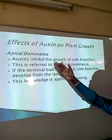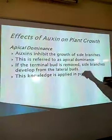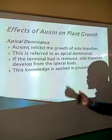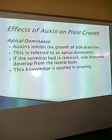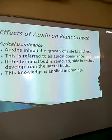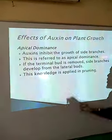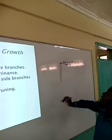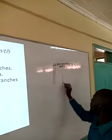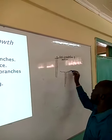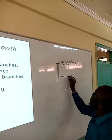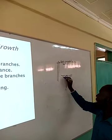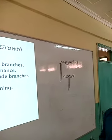Apical dominance is where the auxins inhibit the growth of the side branches — the inhibition of the side branches at the expense of the apical stem. If the terminal bud is removed, the lateral side branches develop. When you remove this one here, you'll see the plant starting to sprout. The side branches will come in because you have removed the high concentration of auxins there, and we are going to have the side branches growing.